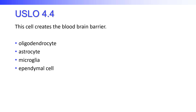These are the four cells making up the neuroglia of the central nervous system. The one that creates the blood-brain barrier is the astrocyte. The astrocyte has many projections off its cell body — early anatomists thought it looked like a star — and those arm-like projections wrap around capillaries, helping to create the blood-brain barrier.